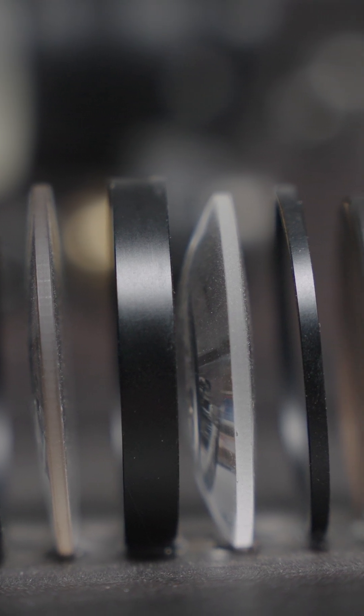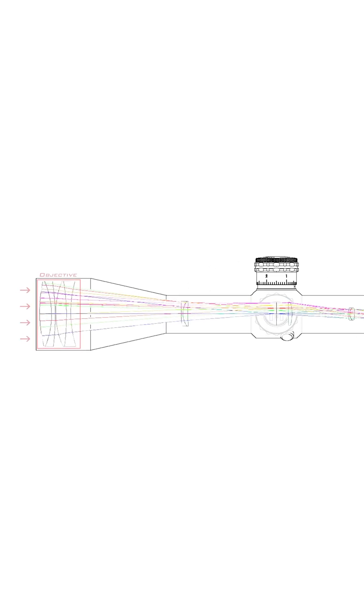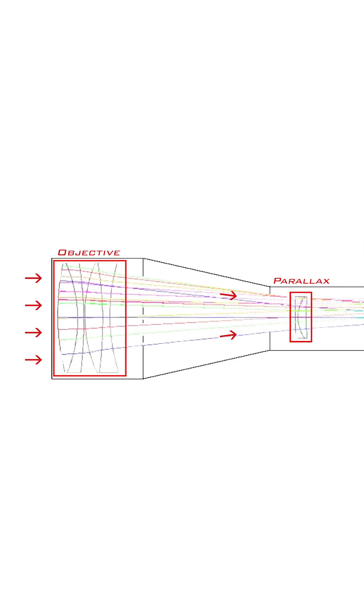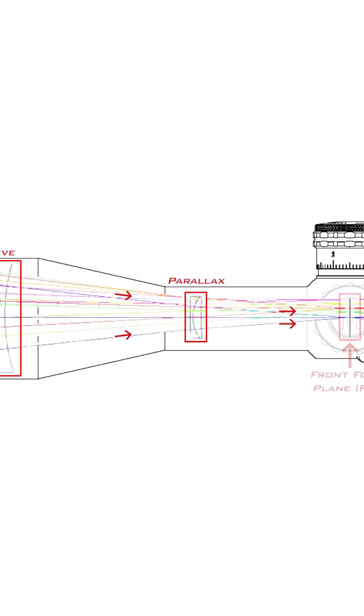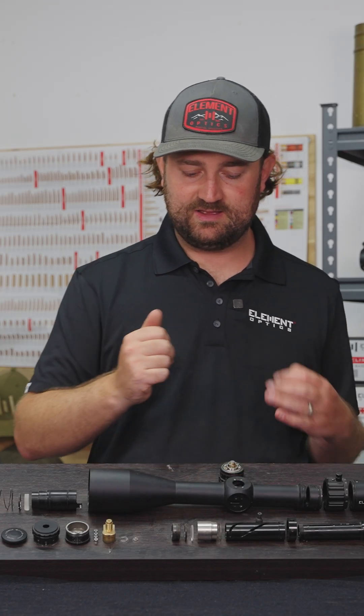The objective assembly has one very important job, and that's to gather light from whatever's in front of it, magnify that image, and focus it onto the first focal plane or front focal plane of your riflescope, which lies right here, basically where the turrets are.